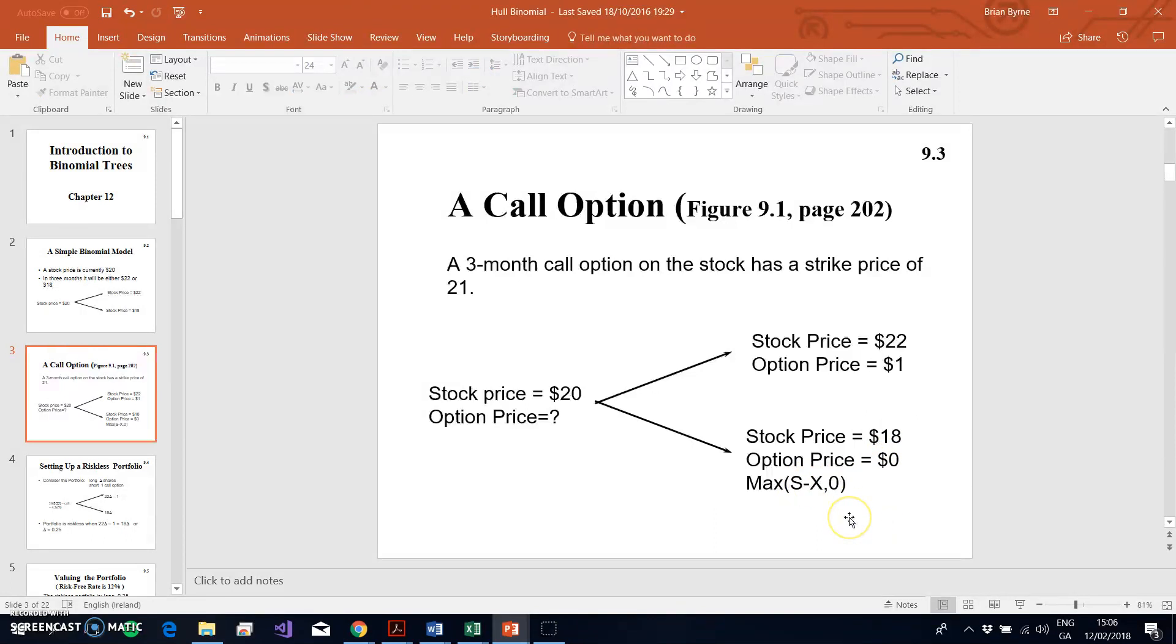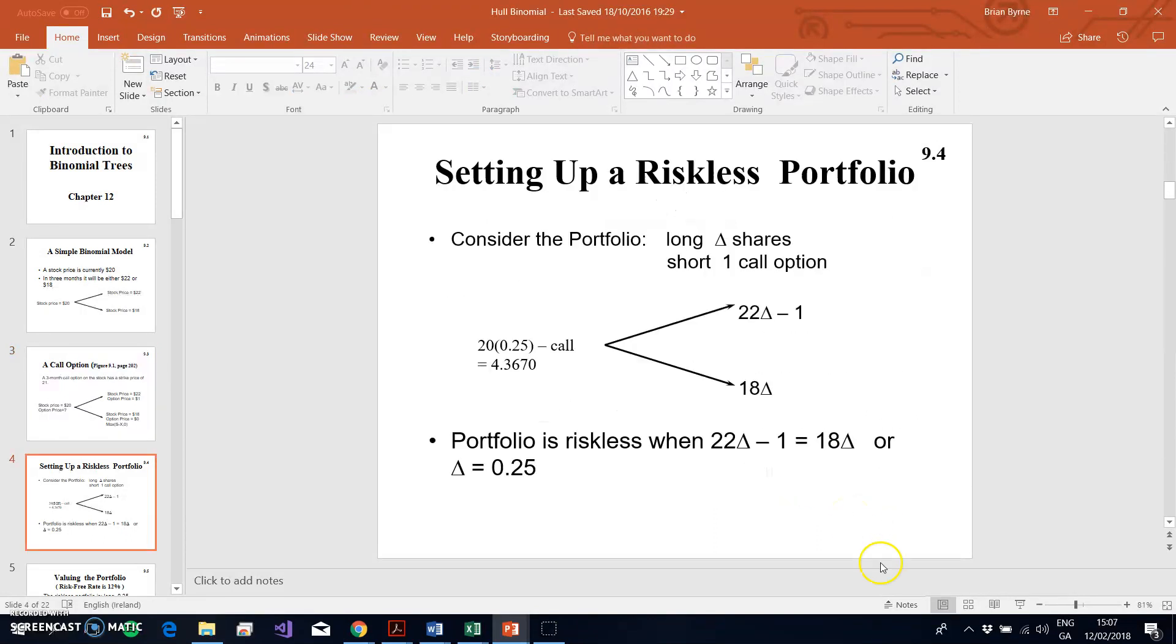Then we proceed to emulating the Black-Scholes model where the conditions for delta hedging or risk neutrality are replicated. We have a replicating portfolio and we set up a position. We have to solve for delta in order to create this riskless portfolio. We say, what if we had a short position in the call option? How would we balance that with a position in the stock?